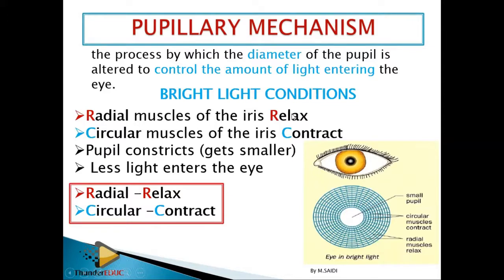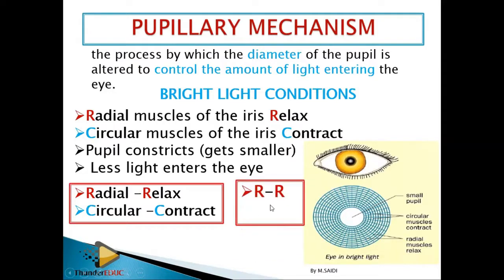When the radial muscles relax, the circular muscles contract. When they contract, the diameter of the pupil decreases. When it decreases, less light enters the eye — the circular muscles push inward so the hole becomes small and less light enters. So: radial muscles relax, circular muscles contract, the diameter of the pupil reduces, and less light enters the eye. That is bright light.